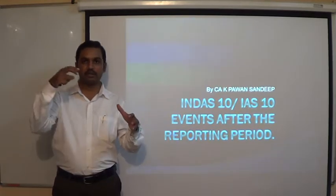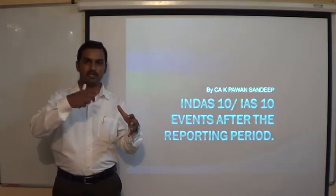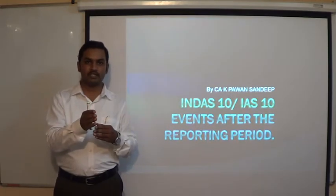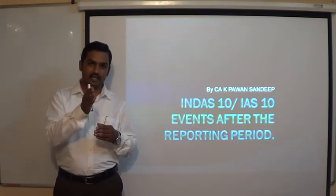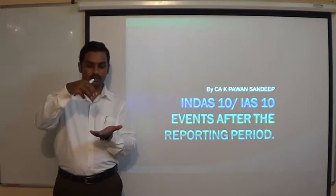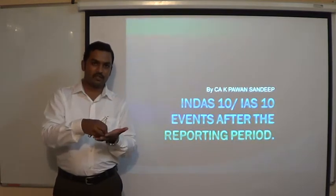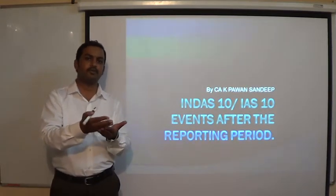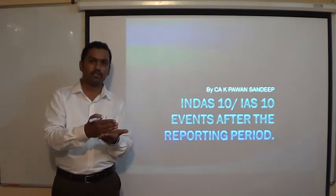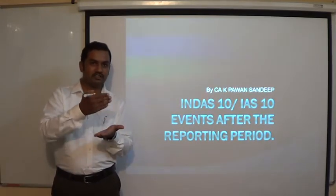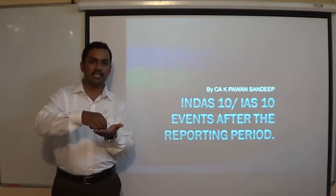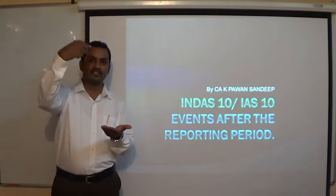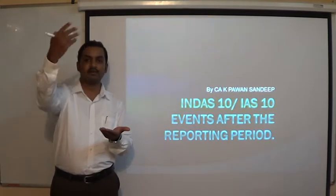During this period, whatever operations have been done by the management, the result of those operations is shown in the profit and loss statement. The balance sheet prepared as on 31st March 2016 covers the assets and liabilities as on that particular date. The incomes, expenses, assets and liabilities shown in these financial statements arise from events and transactions which took place before or on 31st March 2016. The balance sheet does not contain income, expenses, assets or liabilities arising after 31st March 2016.